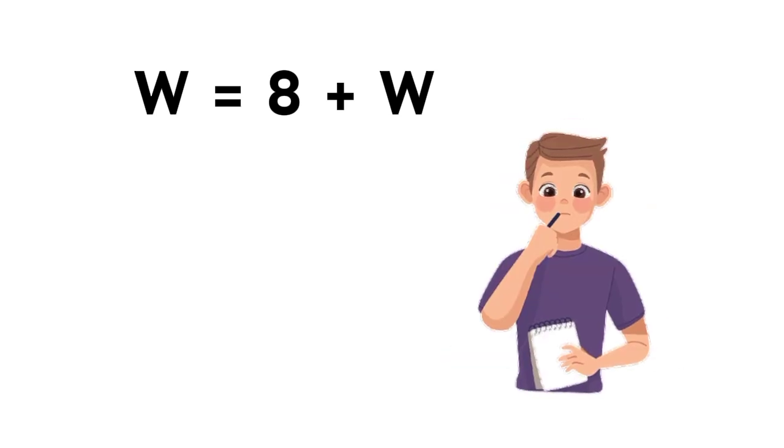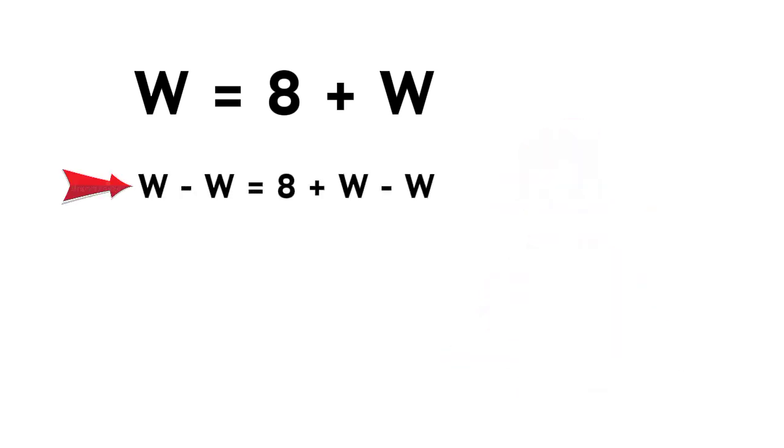If we try to solve it the usual way, we subtract W from both sides, and suddenly we get W minus W equals 8, which becomes 0 equals 8.